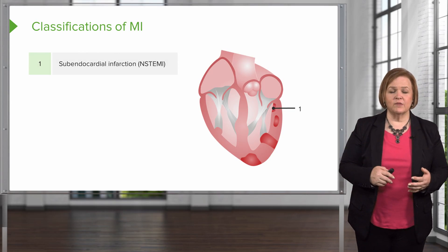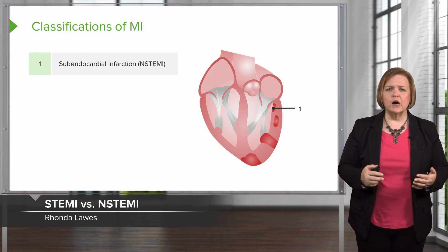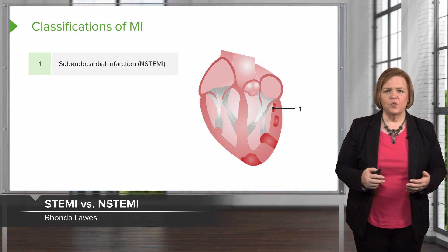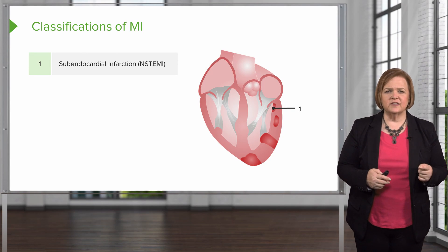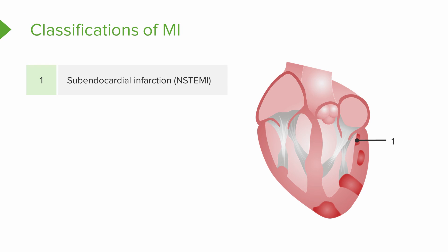How do we classify MIs? That's another way of saying, how bad is it? Number one shows you a subendocardial infarction. That's a non-STEMI — a non-ST segment elevated MI.